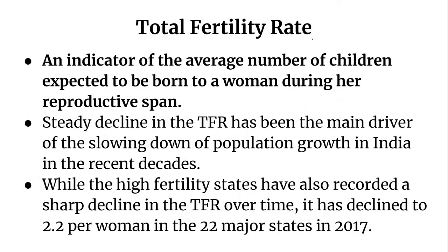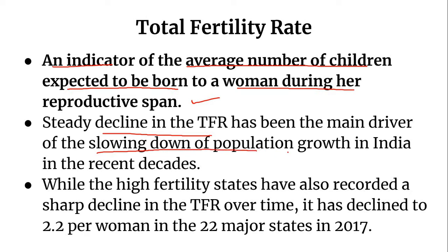Total fertility rate is an indicator of the average number of children expected to be born to a woman during her reproductive span. There has been a steady decline in the TFR, and it is the main driver of the slowing down of population growth in India in recent decades.